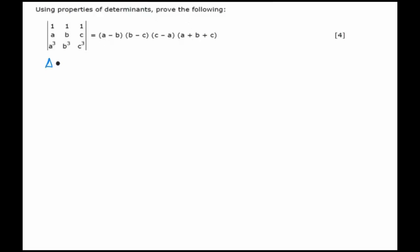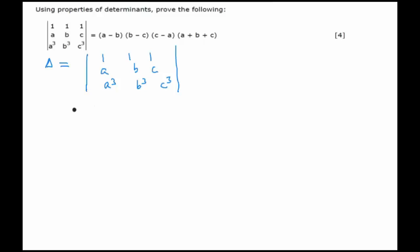First of all, let us say that this determinant is delta = [1, 1, 1; a, b, c; a³, b³, c³]. This looks like a very simple determinant, but the expression on the right-hand side is very complex — it's the multiplication of four terms. We need to open the determinant first. As many zeros as we are able to create, the better.